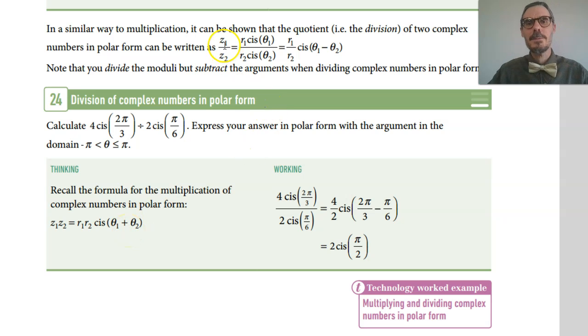And correspondingly, if I'm dividing two complex numbers in polar form, I'm going to divide the modulus and I'm going to subtract the argument. Divide the moduli, subtract the arguments. It's exactly the same as division versus multiplication any other time. So if we were multiplying by the inverse of z, we'd be multiplying by the inverse of its modulus, dividing by it, and we'd be adding the negative angle. So we're subtracting the angle.